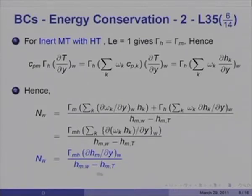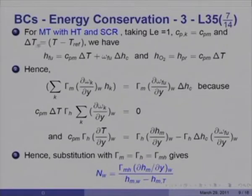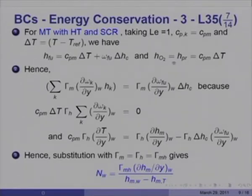So Nw takes the same form as derived from the mass conservation principle but with the variable enthalpy H_M: Nw equals γ_M (dH_M/dy at W) divided by (H_MW minus H_MT). Now let us see the numerator when mass transfer involves simple chemical reaction. Here we take Lewis number equal to 1 and also say C_PK equals C_PM. Let ΔT stand for T minus T_ref; then the enthalpy of the fuel is C_PM ΔT plus ω_Fu ΔH_C, associating the heat of combustion with the fuel, so H_O2 and H_product are simply C_PM ΔT.